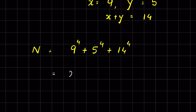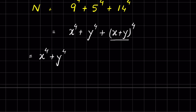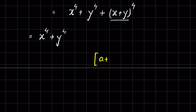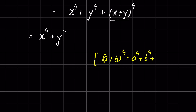We can write this as x to the power 4 plus y to the power 4, and 14 as (x plus y) whole to the power 4. We can expand (x plus y) to the power 4, since it is an algebraic expression: (a plus b) whole squared times (a plus b) whole squared. Expanding gives a to the power 4 plus 4a³b plus 4b³a plus 6a²b².